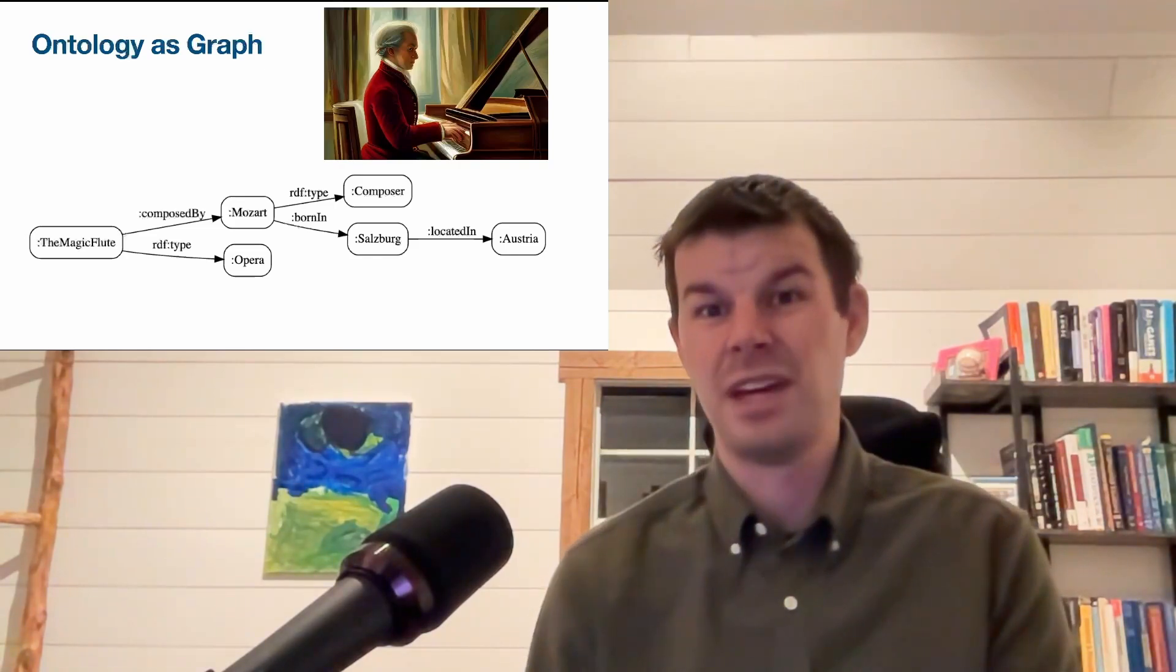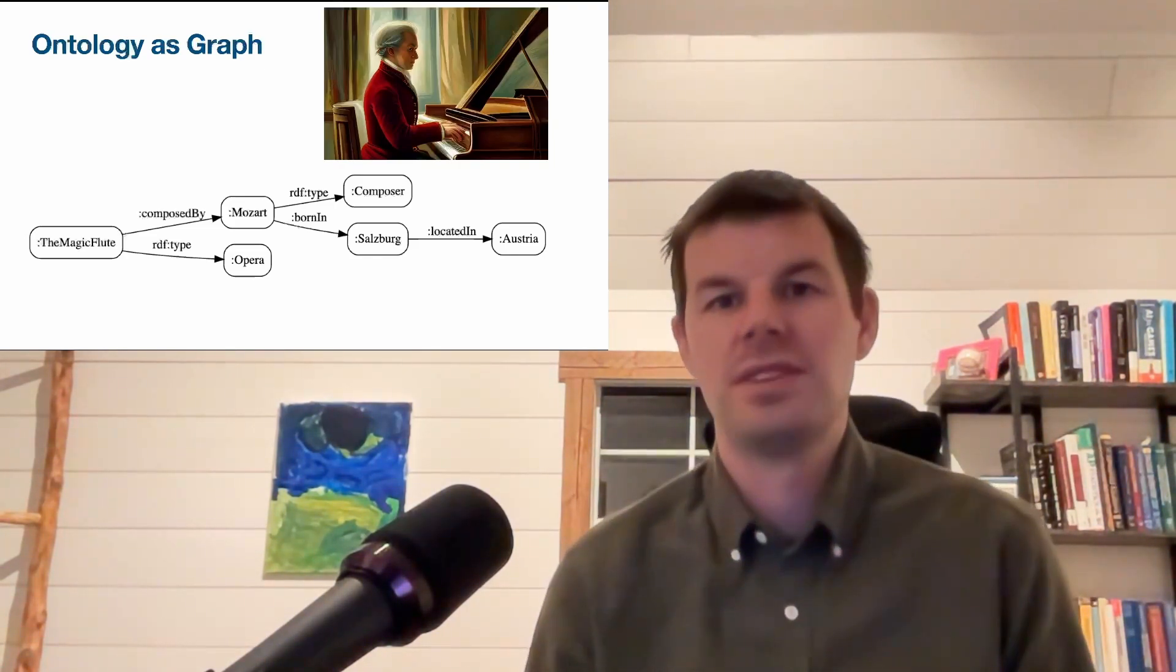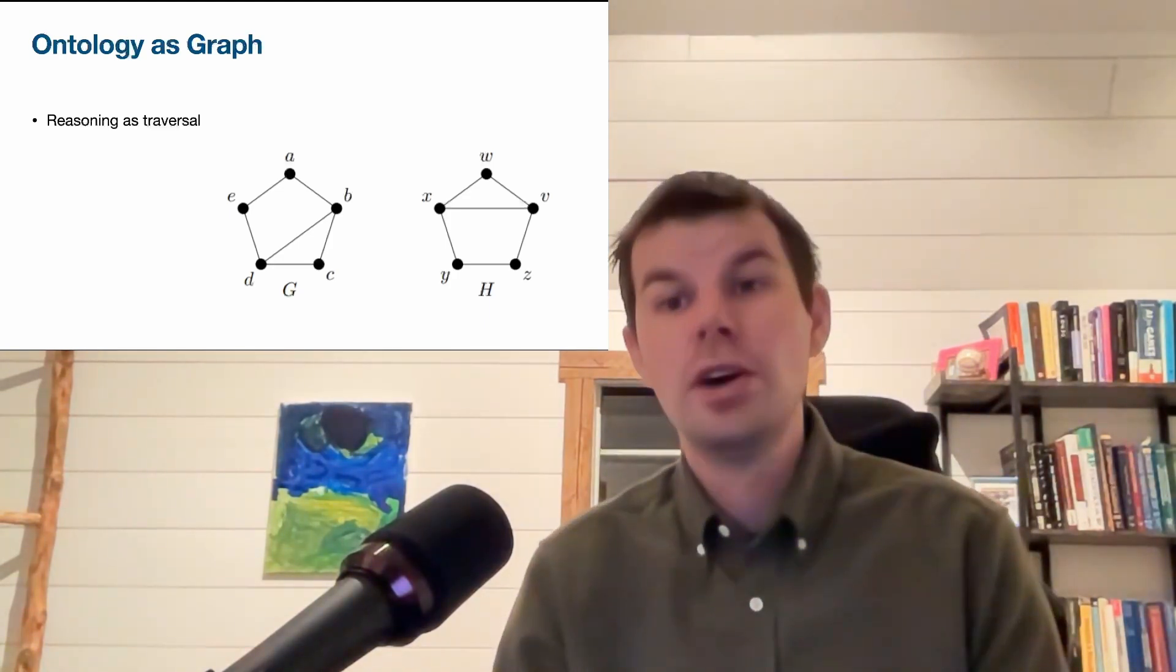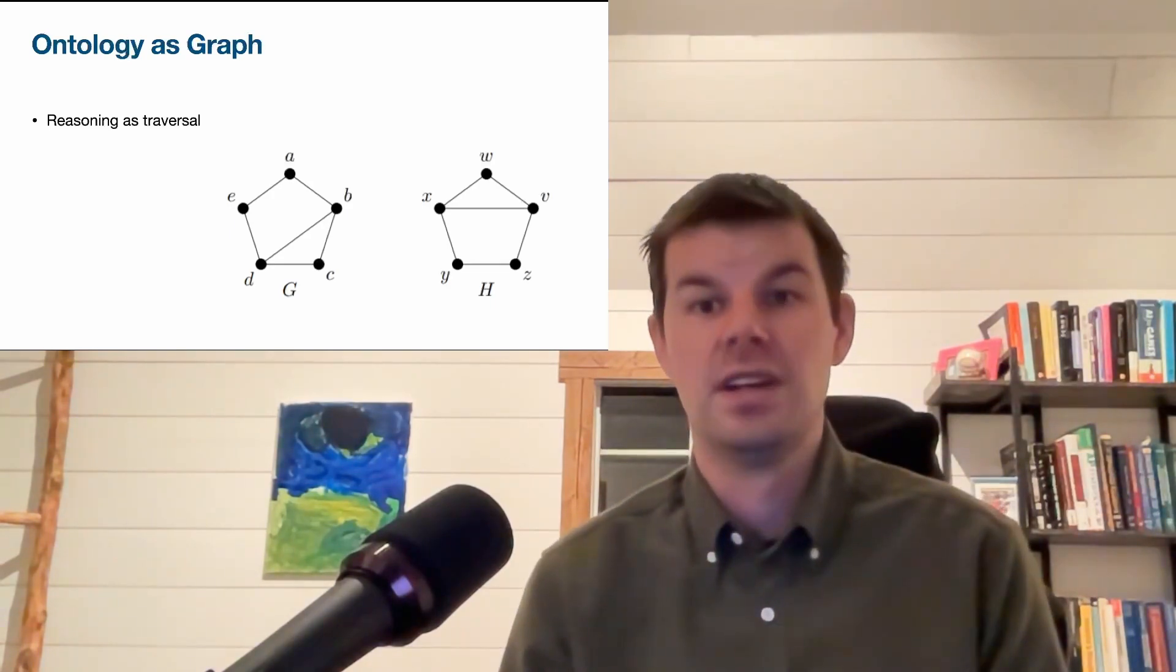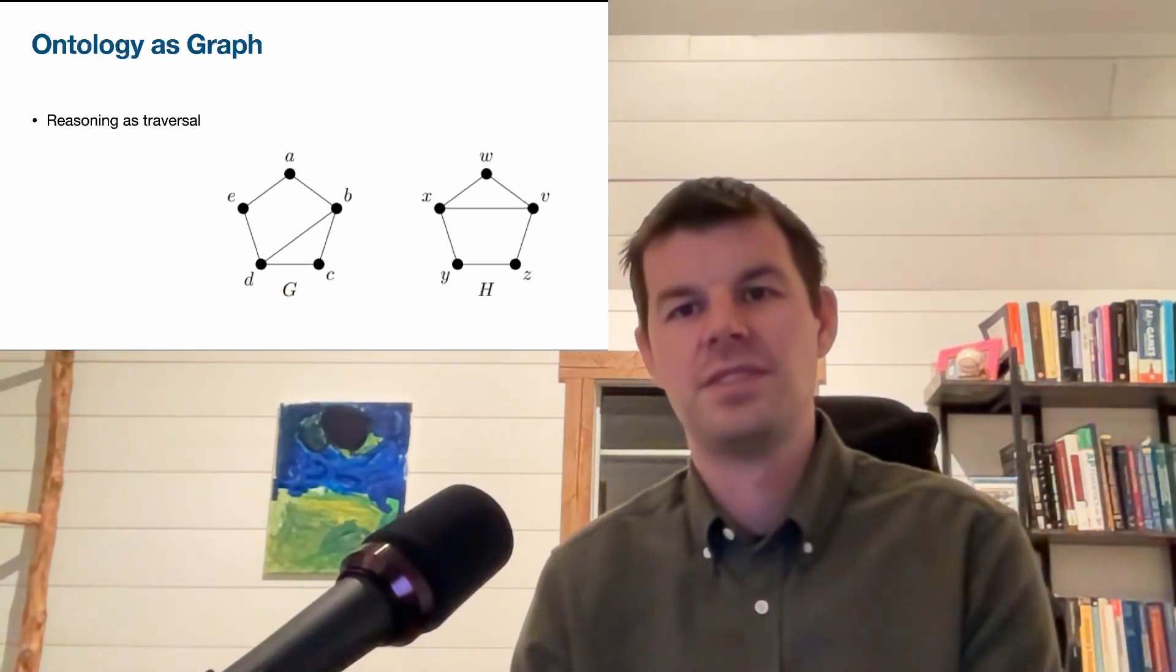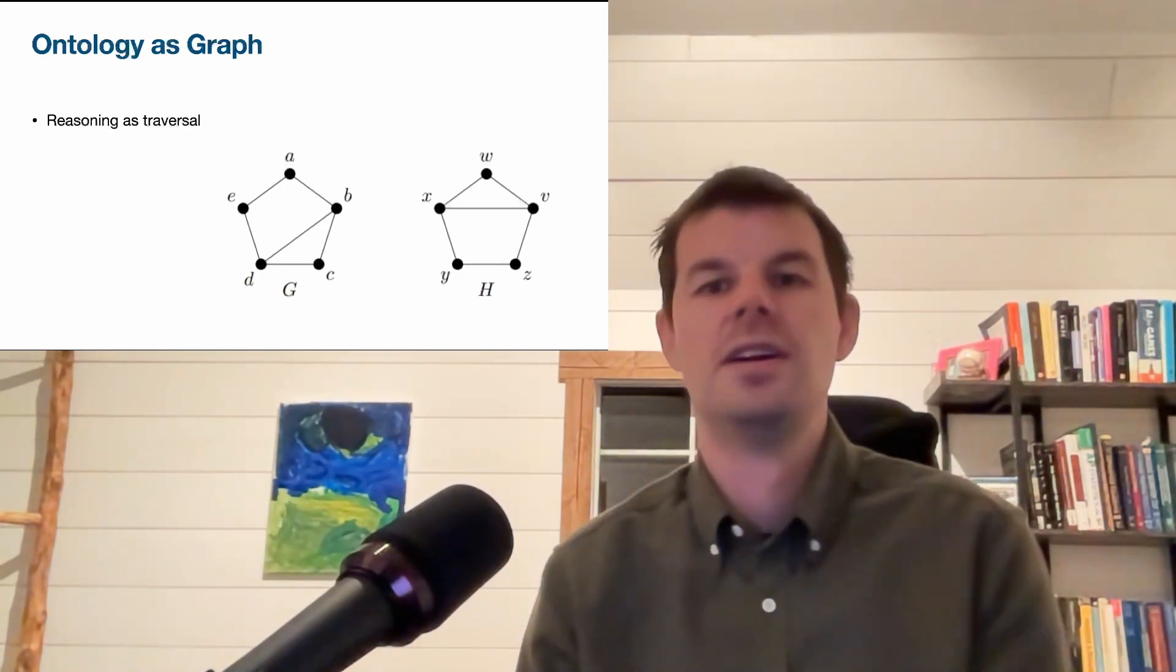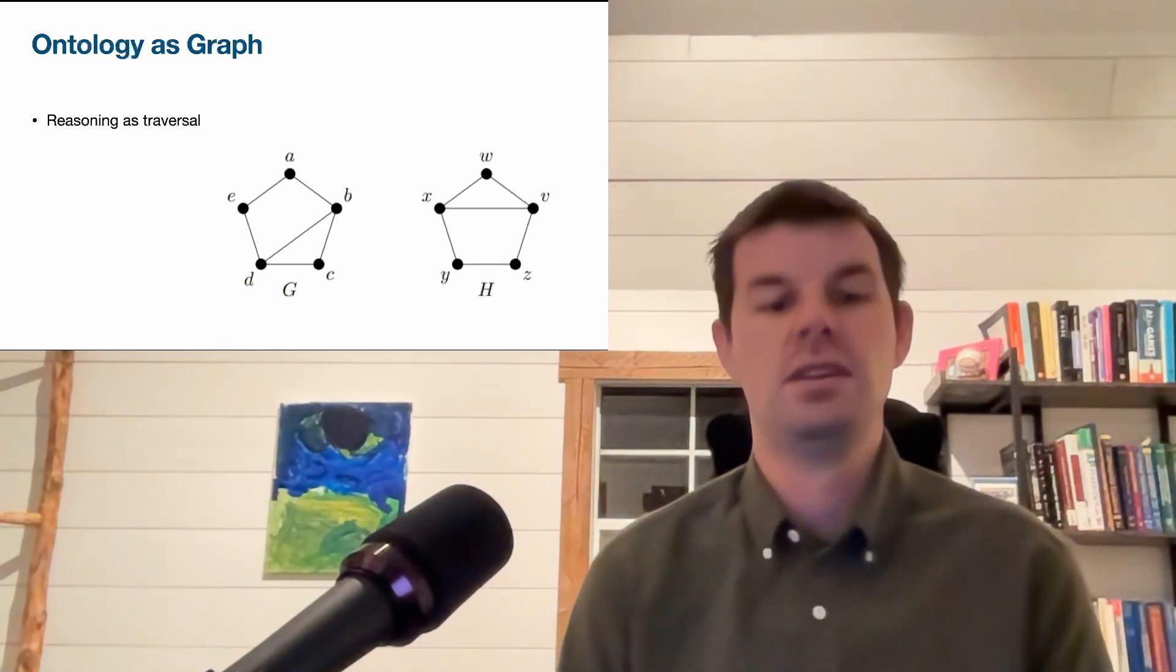Once we see that this has a mathematical structure, we can evaluate it in the sort of vocabulary that graph theory and mathematics has. This allows us to do a couple of different things. One is to think about reasoning in terms of how we traverse the graph. Since I know that Mozart was born in Salzburg, I know that he was born in Austria. Why is that? Because I can cross my way through the different nodes and edges in the graph to see that he was born in Austria, or he was born in Salzburg, which is located in Austria, and therefore he was born in Austria. That sort of inference can be done and be thought of in terms of the graph theory application.